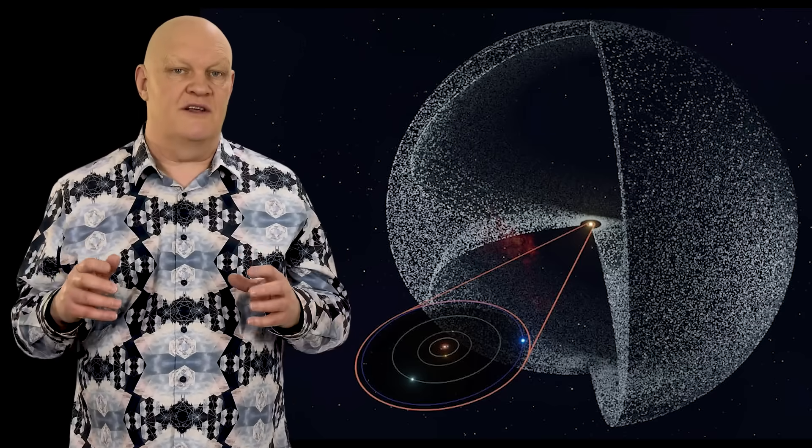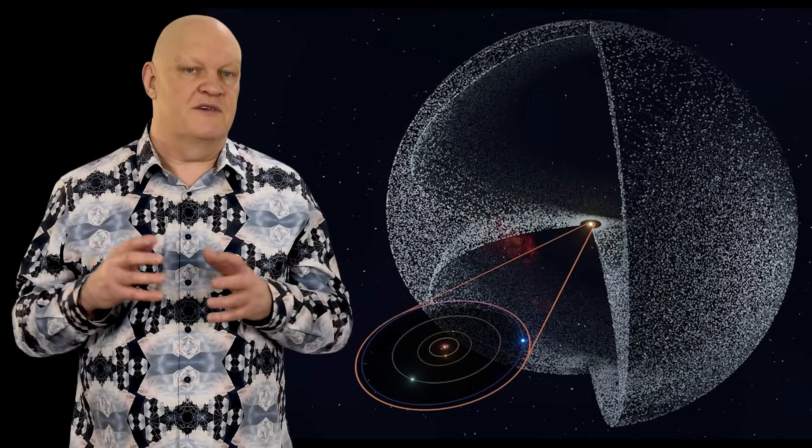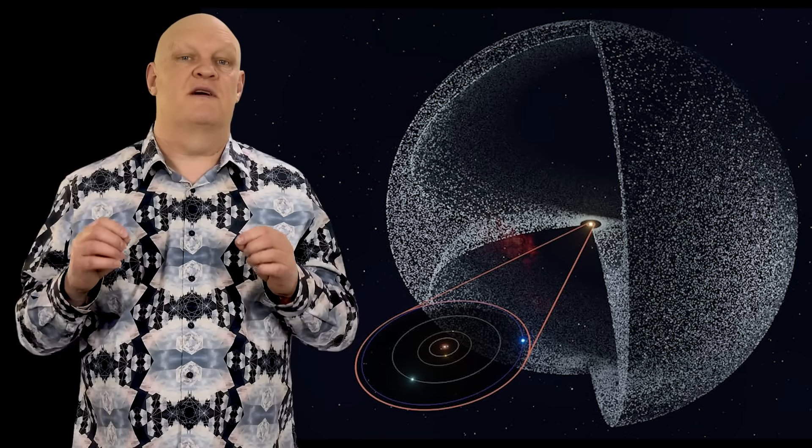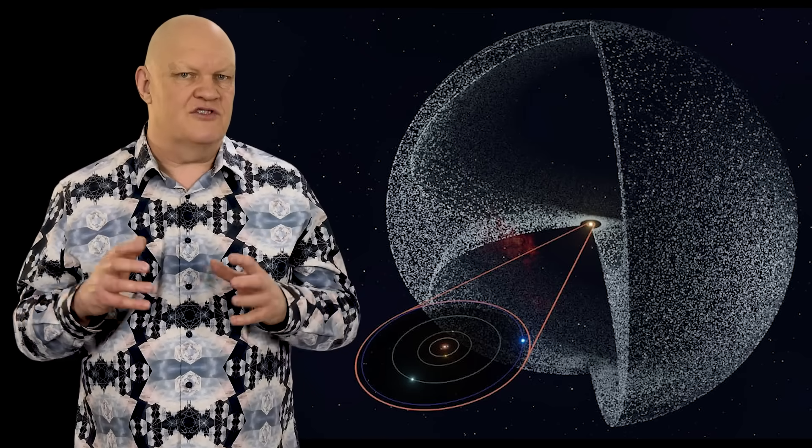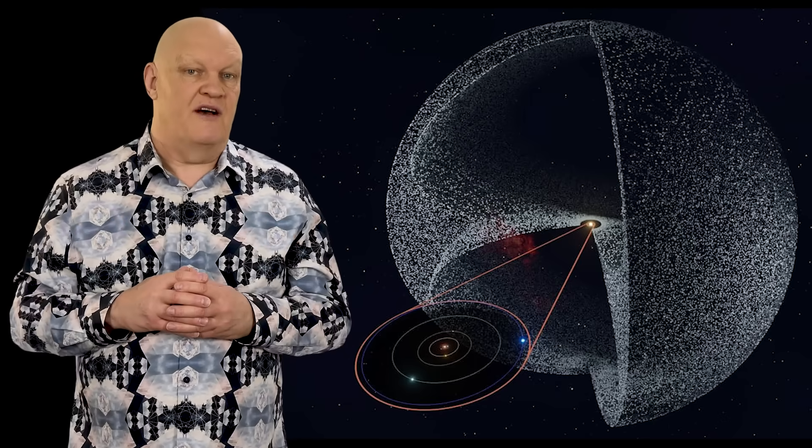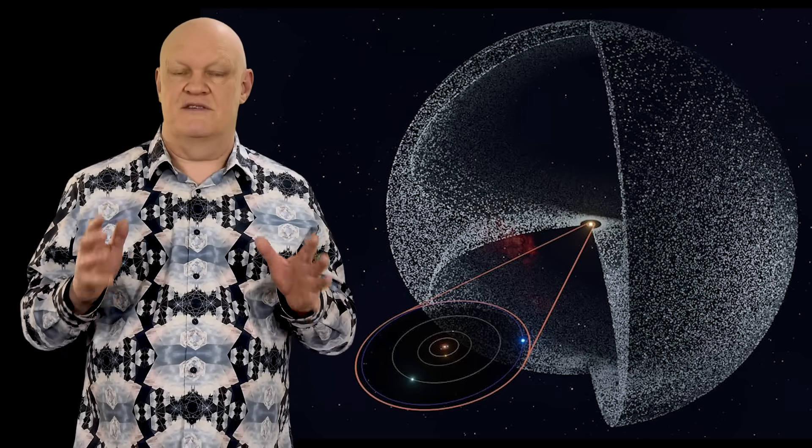But they aren't going towards Proxima Centauri. It will take them about 20,000 years for them just to pass through the Oort cloud, which is a shell of icy bodies that surrounds the solar system that contains trillions of bits of ice and rock but is considered by some to be the true edge of the solar system. Once it has left this they will feel the gravitational effect of other stars more strongly than our sun.